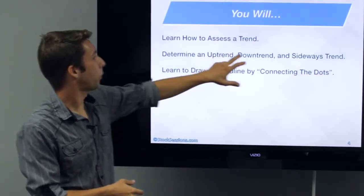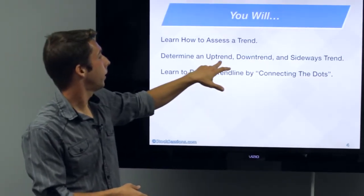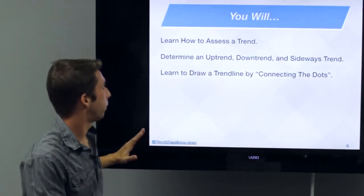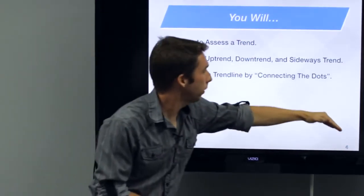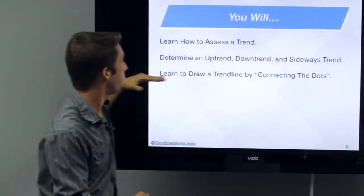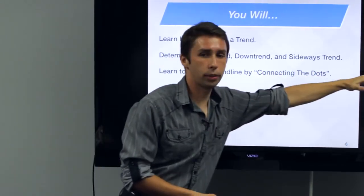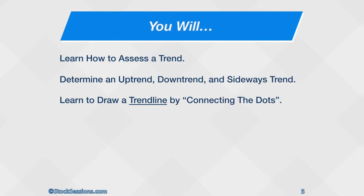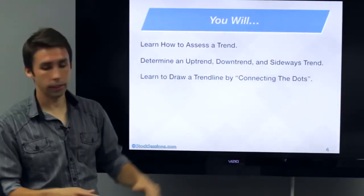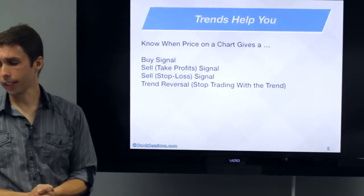We'll determine what — there are three of them. Uptrend: moving bottom to top over time. Downtrend: top moving to bottom. And sideways: moving just flat like a horizon — a flat trend. It sounds simple, and that's really all this is. Connecting the dots. That's as simple as it gets.